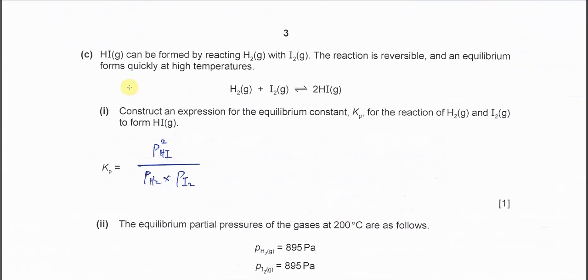HI gas can be formed by reacting H2 gas with I2 gas. The reaction is reversible, and equilibrium forms quickly at high temperatures. Construct the expression of Kp for this equilibrium. Very easy. It's product over reactant. The partial pressure of HI squared because coefficient is 2, therefore it's squared.